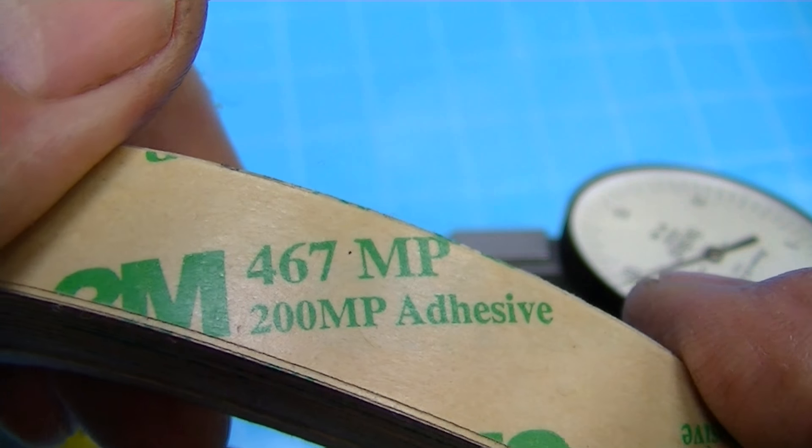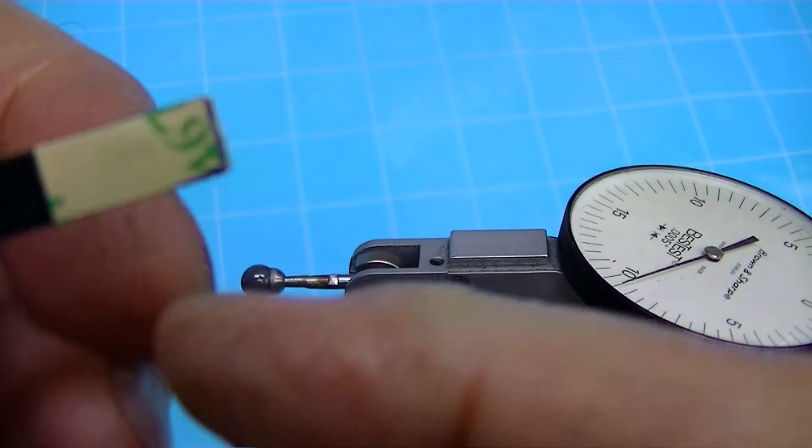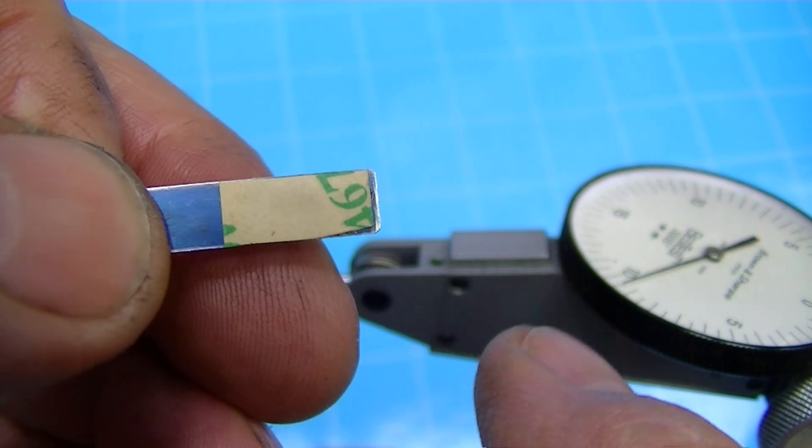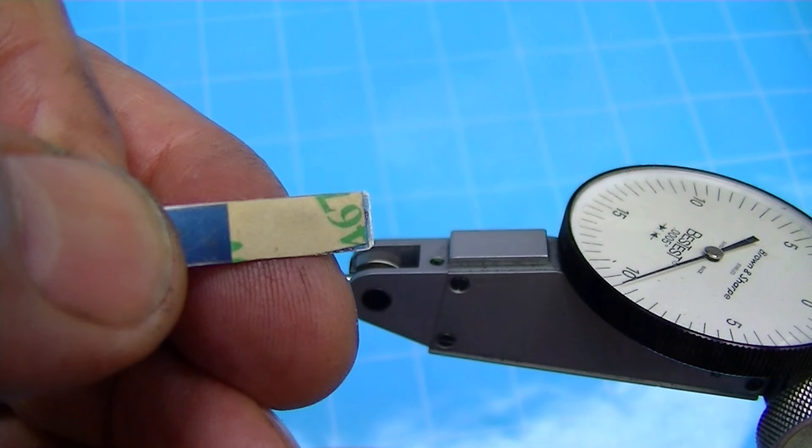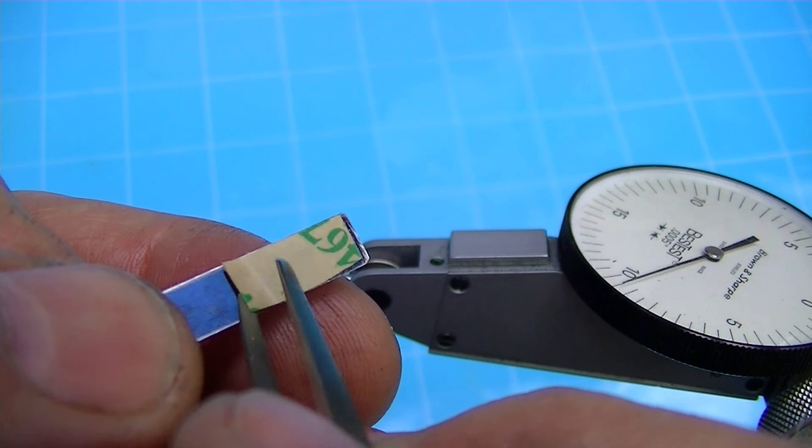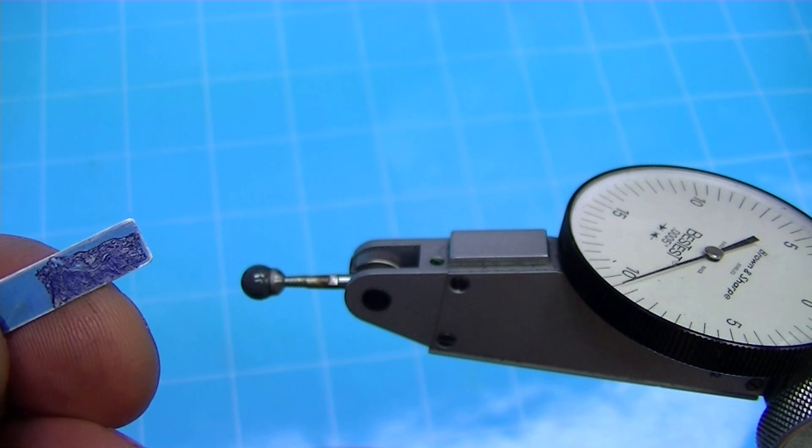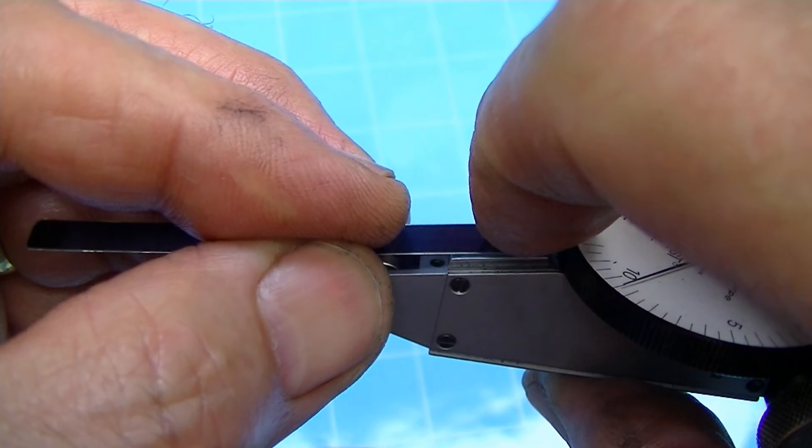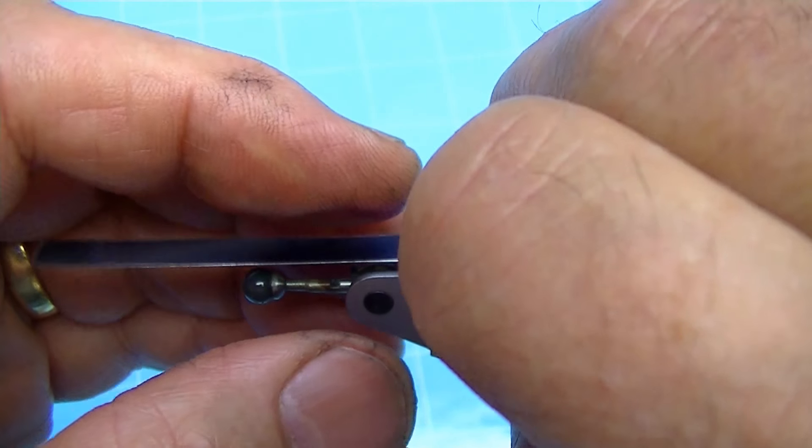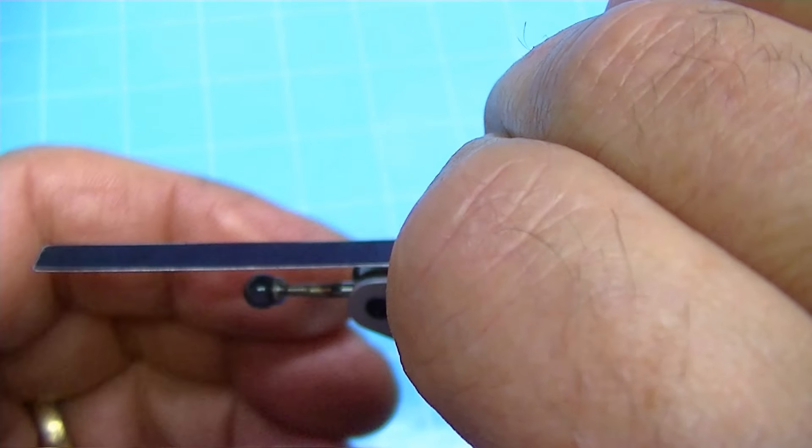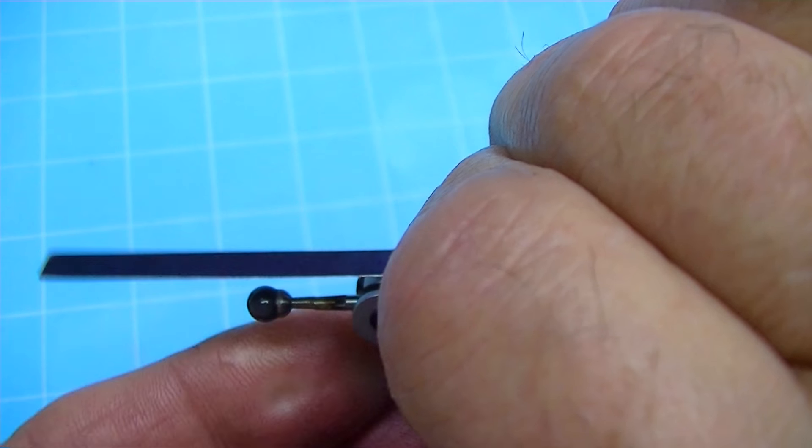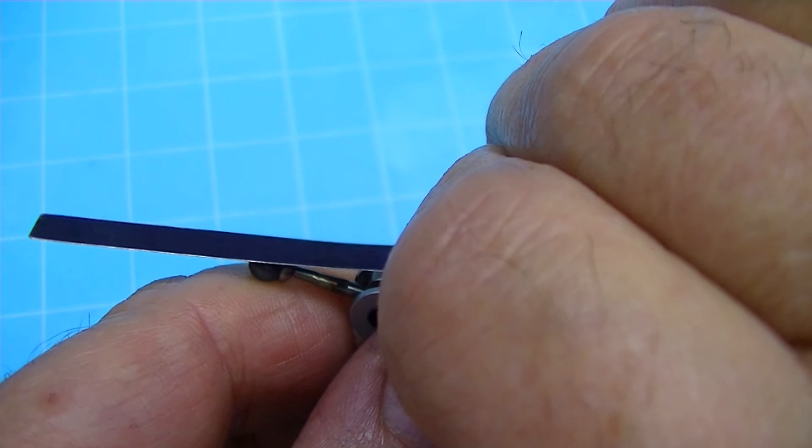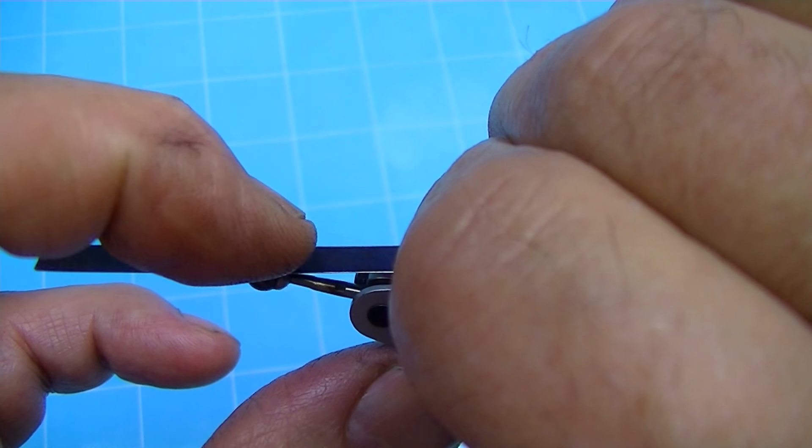467MP adhesive, my favorite. I have a little piece on the spring steel here. De-grease this with alcohol. De-grease the indicator with alcohol. Get my duckbill little tweezers here. And I will set this on like this. Squeeze that down tight. Hold that for a few seconds. Bring the indicator up until it's actually leaning on this a little bit. Still got our action.